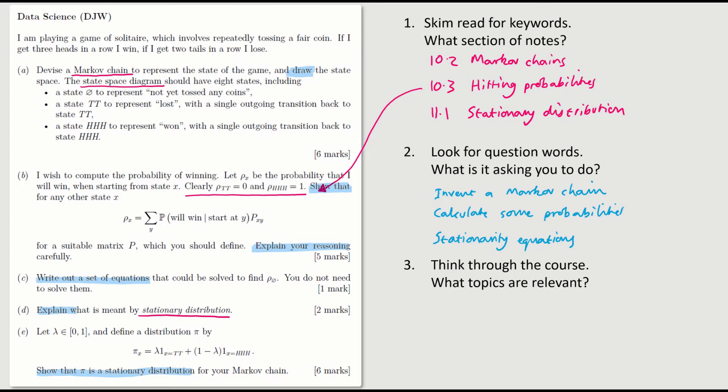We have to invent a Markov chain, do some probability calculations, and write down the stationarity equations. Next, think through the course and ask yourself what topics are relevant. Obviously this is a question about Markov chain calculations, so it's worth reminding ourselves what the key ideas are. They are remembering the memorylessness and resetting the clock.